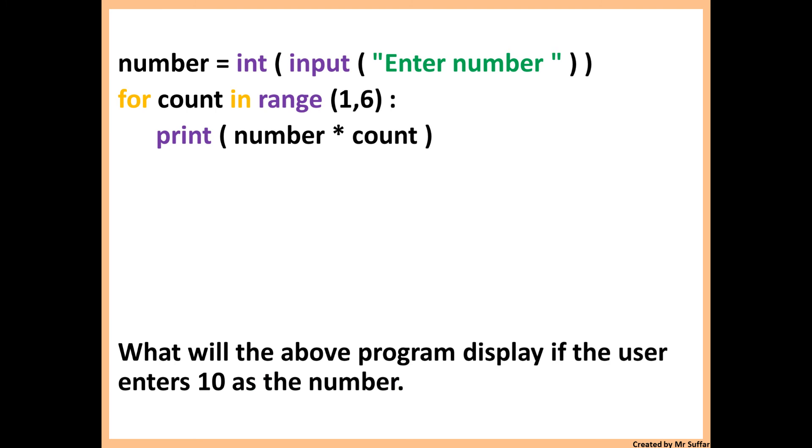Here's another example. We're asking the user for a number in line 1. Then we said for count in range 1 comma 6, so this will loop from 1 to 5, but not including 6. We're not including 6 because the last number does not count in Python. But be careful, in the exam the last number will count. When they use 1 comma 6, it will mean it will loop from 1 up to 6 and including 6.